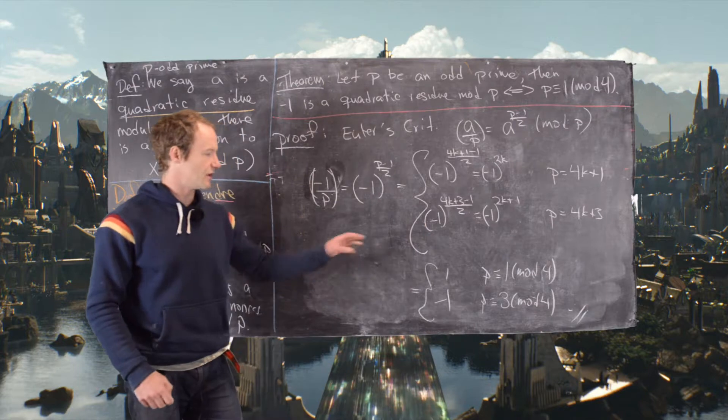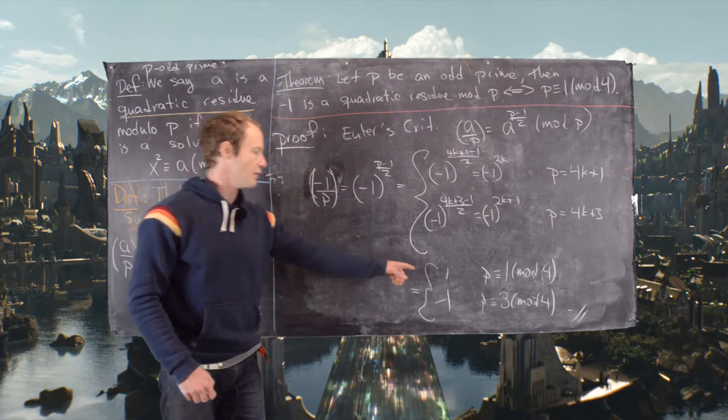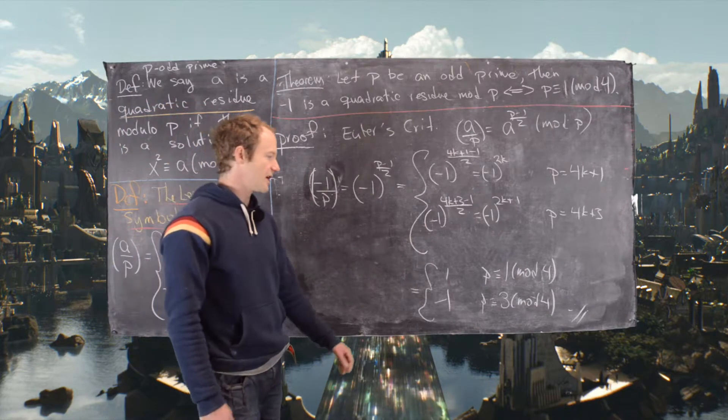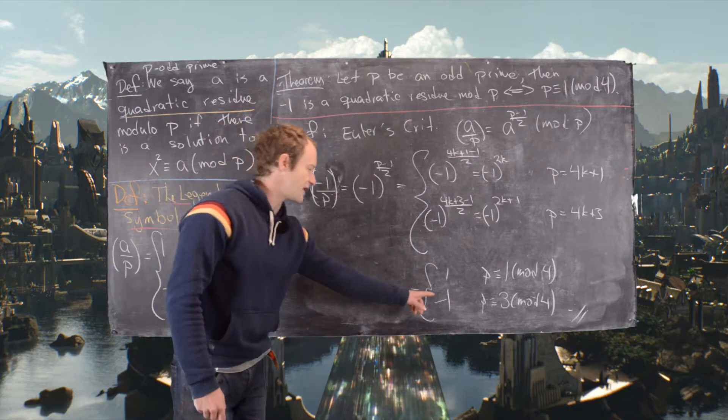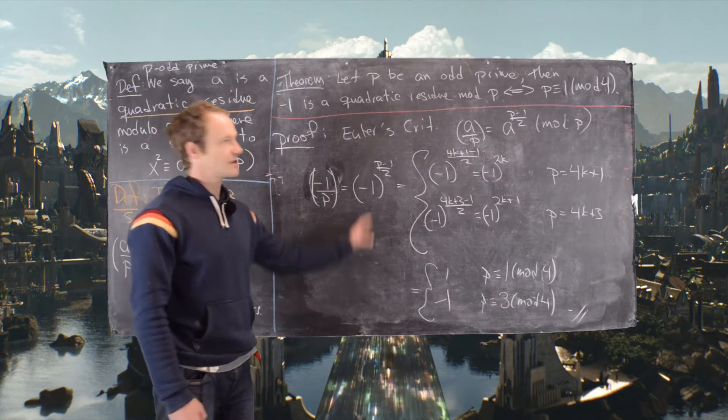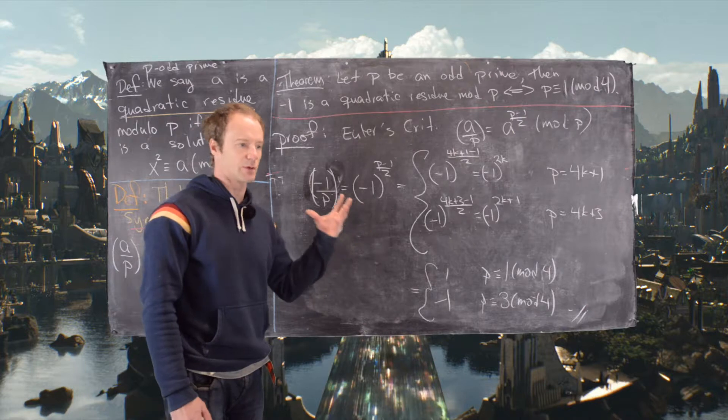Good, and then that finishes this theorem. So notice if we're congruent to 1 mod 4 we get 1, which means you are a quadratic residue. And if p is 3 mod 4 you get negative 1, which means you are not a quadratic residue. Okay, so good. I'll clean up the board and then we'll look at some examples where we can calculate very very quickly if negative 1 has a square root modulo p.